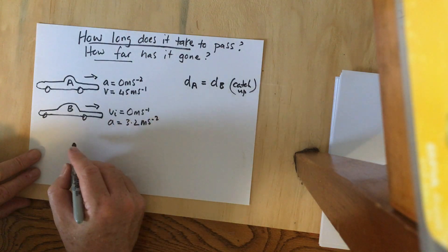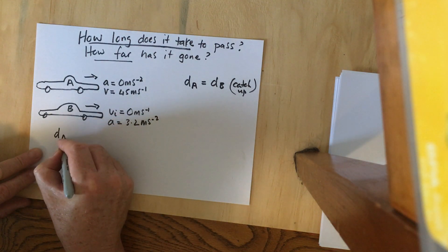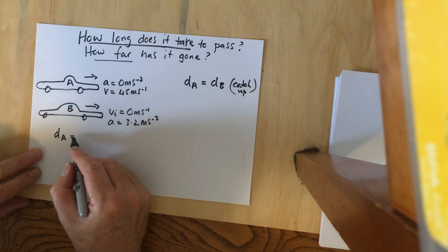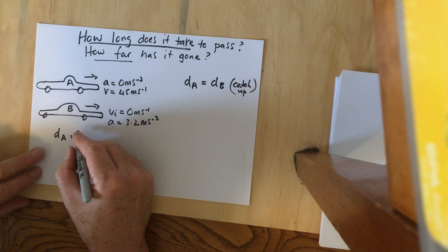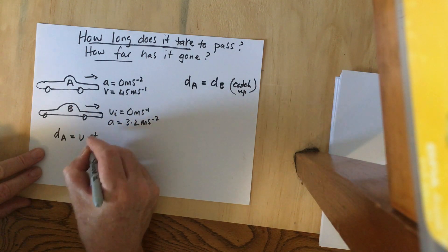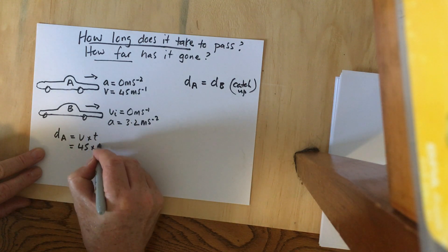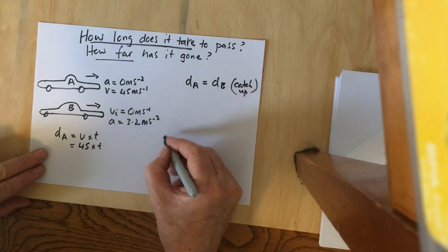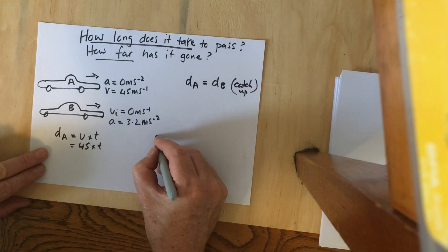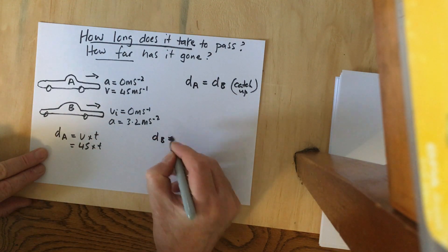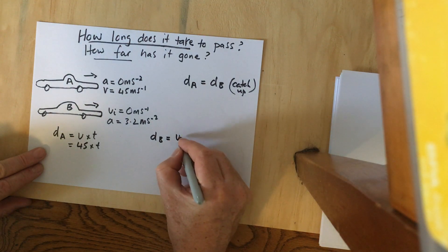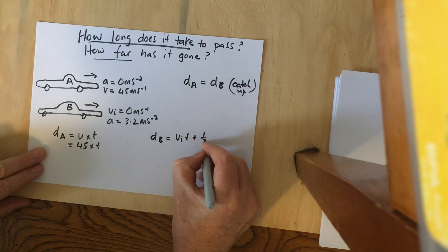The distance for Car A will be v times t. So the velocity is 45, and we don't know the time yet. The distance for Car B is going to be vi*t plus half*a*t squared.